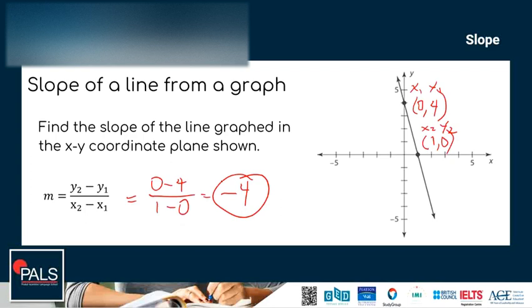If you remember from the previous slide, when the graph is downhill, the slope is negative. So our answer of negative 4 makes sense because the graph is downhill.